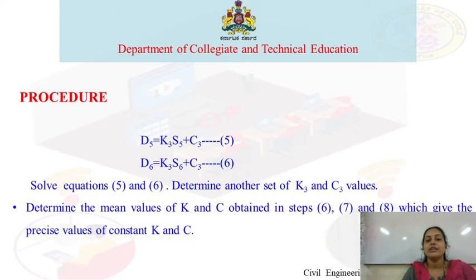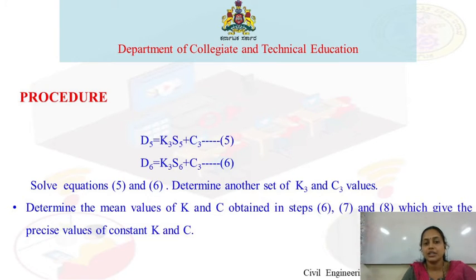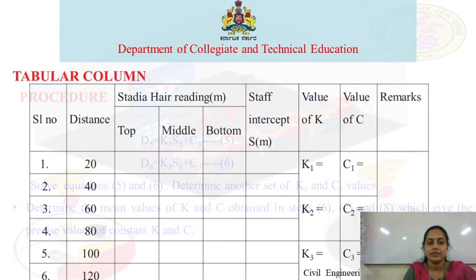Find out the mean value of K as (K1 + K2 + K3) / 3. Similarly, find the mean value of C as (C1 + C2 + C3) / 3. The mean values of K and C give the precise values.